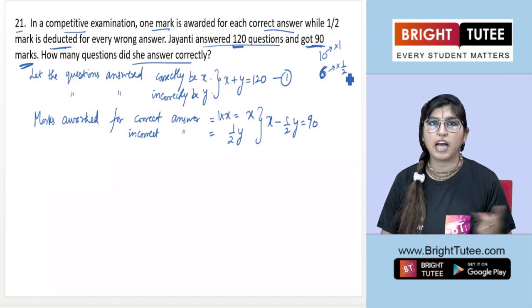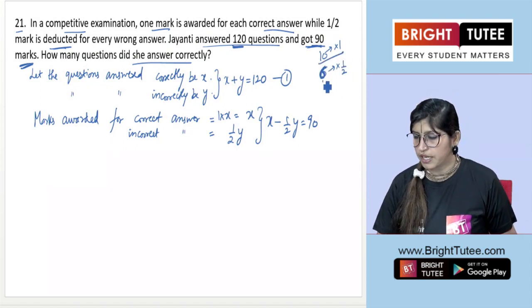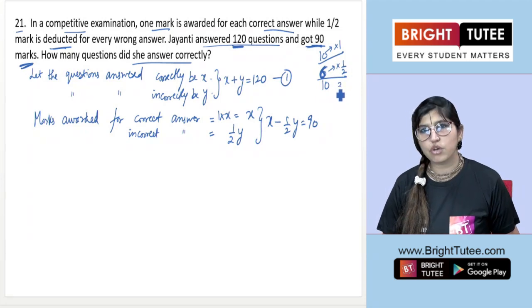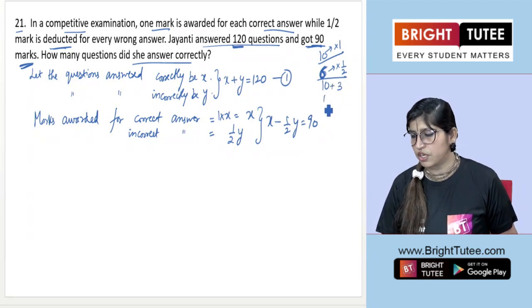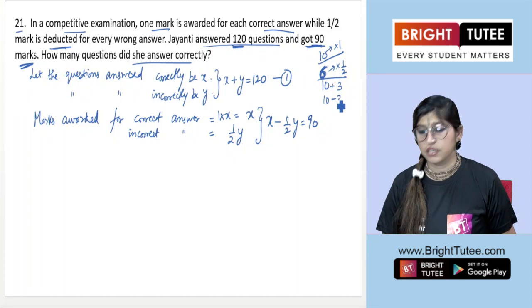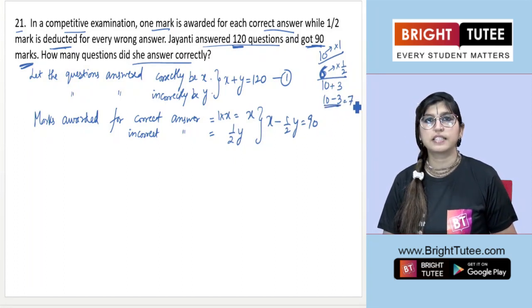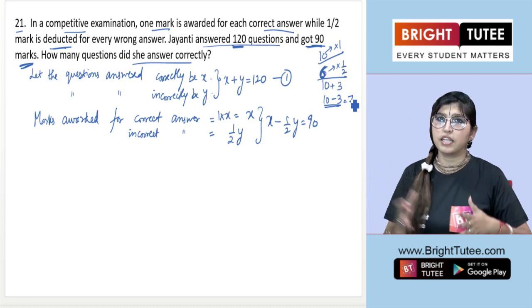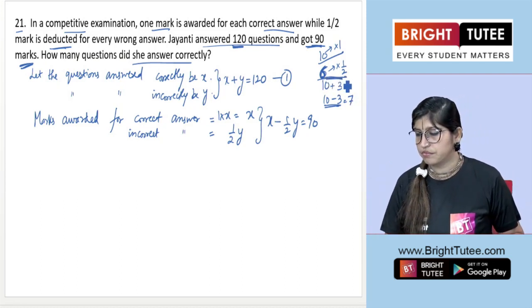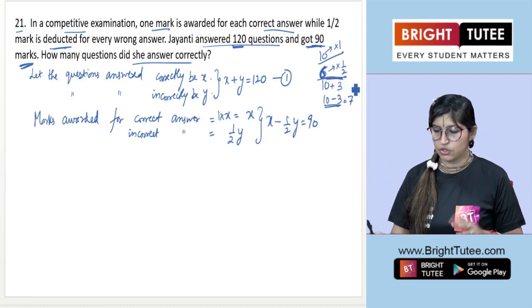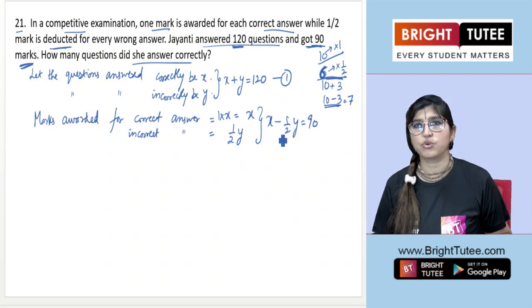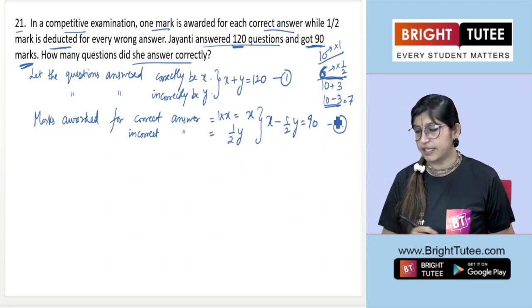For correct answers you get one mark, for incorrect answers I'm deducting half marks. So you'll be getting 10, I'll be deducting 2.5, so the total marks should be 10 minus 2.5, which is 7.5. We are deducting the marks for incorrect answers, so it should be x - (1/2)y = 90.